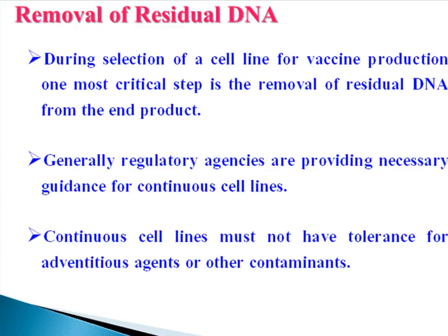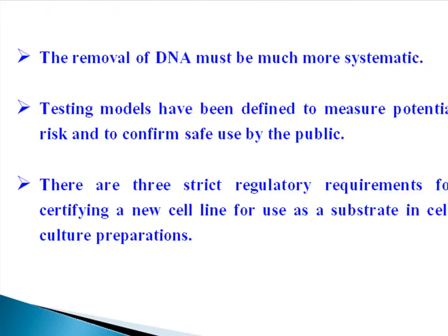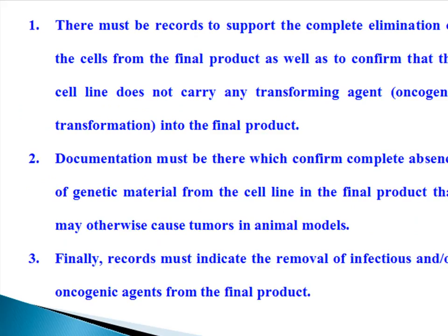Removal of residual DNA: during selection of a cell line for vaccine production, one most critical step is the removal of residual DNA from the end product. Generally, regulatory agencies provide necessary guidance for continuous cell lines. Continuous cell lines must not have tolerance for adventitious agents or other contaminants. The removal of DNA must be much more systematic. Testing models have been defined to measure potential risk and to confirm safe use by the public. There are three strict regulatory requirements for certifying a new cell line for use as a substrate in cell culture preparation. There must be records to support the complete elimination of cells from the final product, as well as to confirm that the cell line does not carry any transforming agent into the final product.